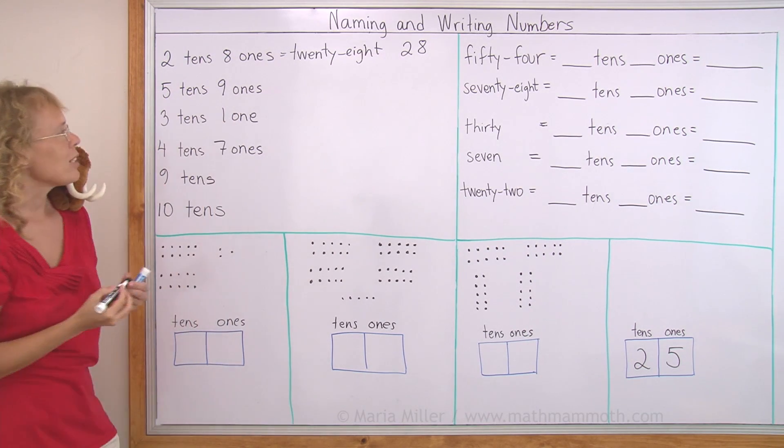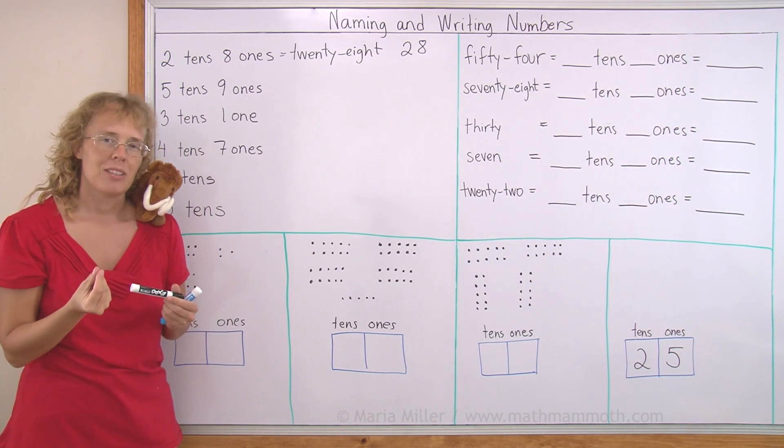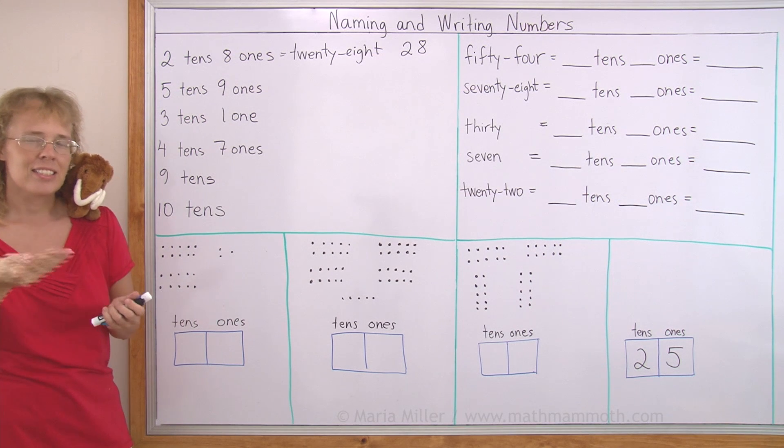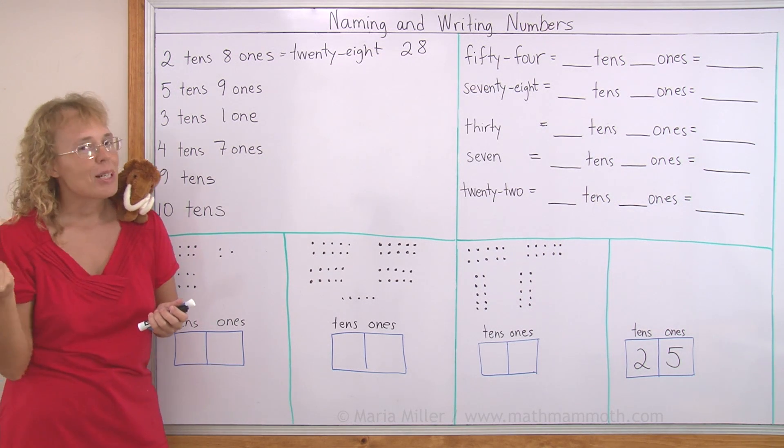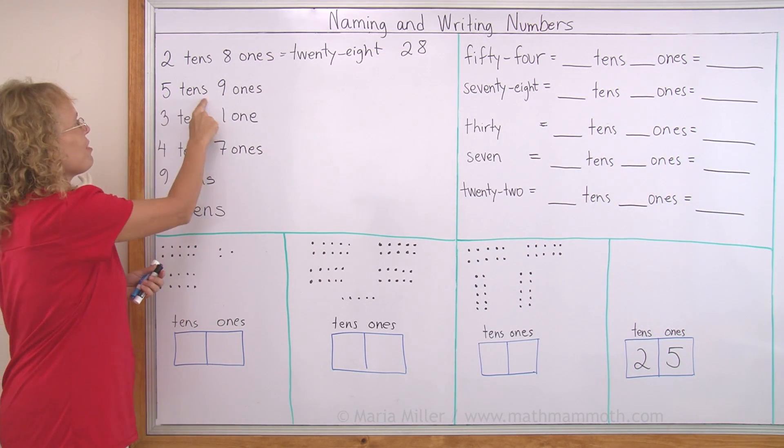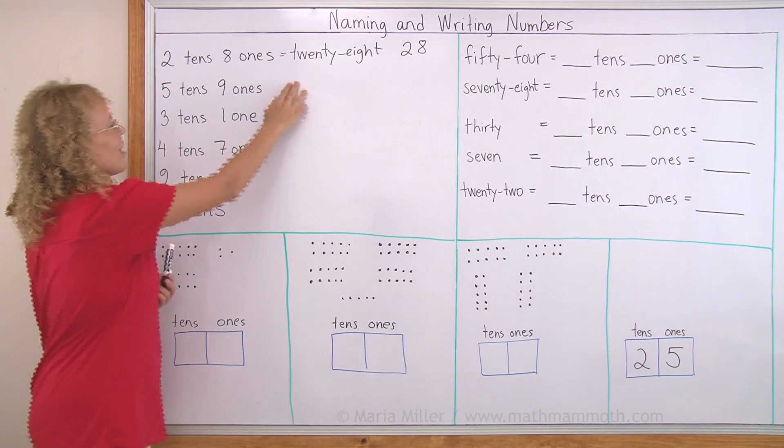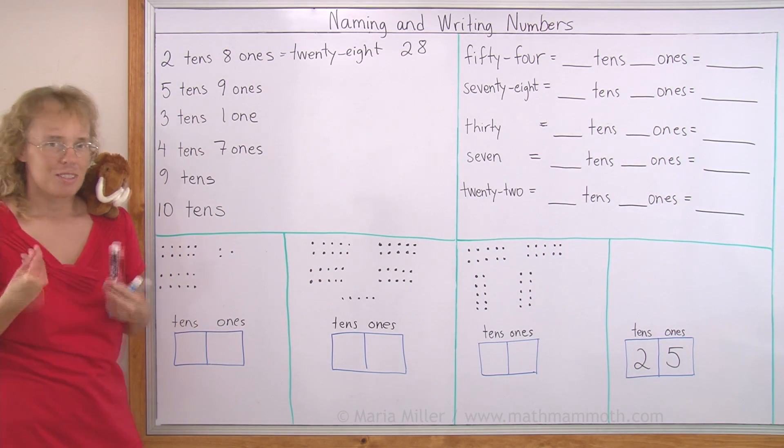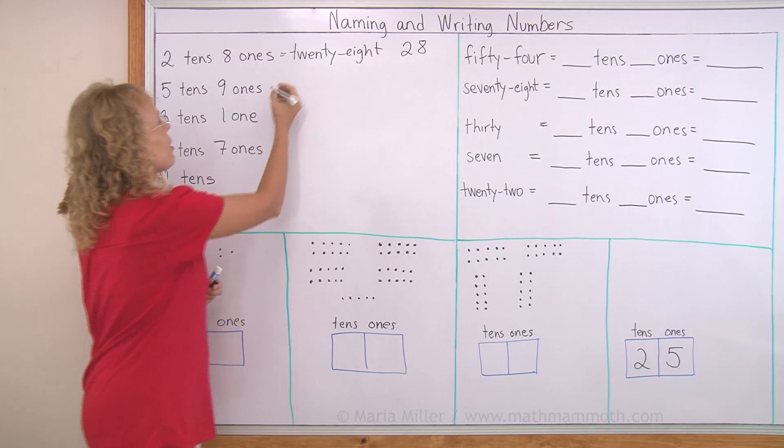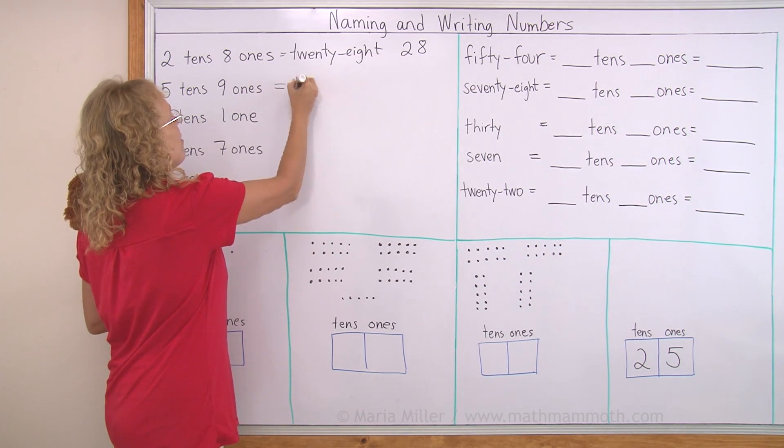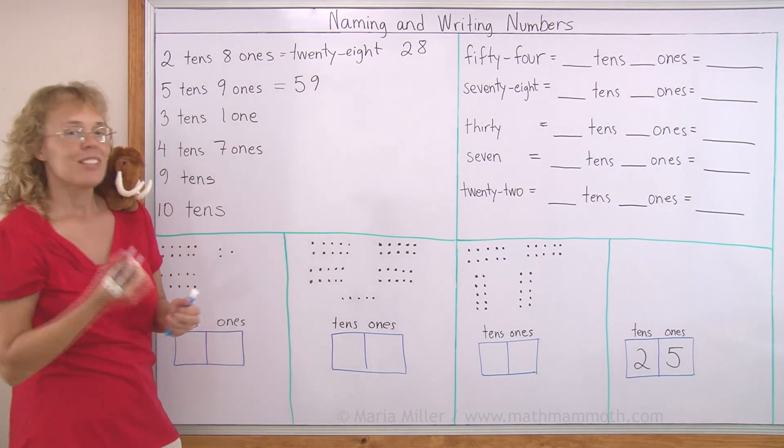5 tens, 9 ones. What would be the name for that number? Remember 5 tens is 50. This is 59, yes. I'm not going to write the rest of them for the sake of time, but I'm going to write it with numbers. It is 5 and 9 like that. We say 59.